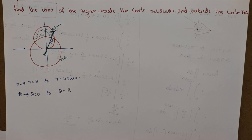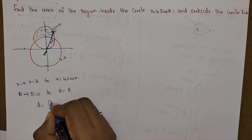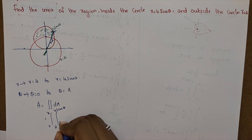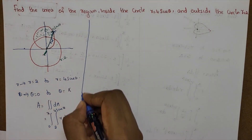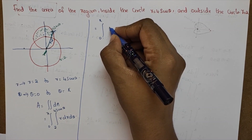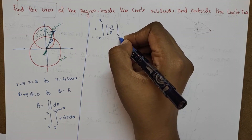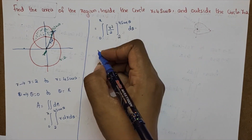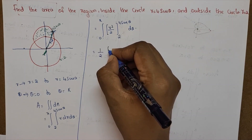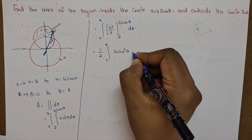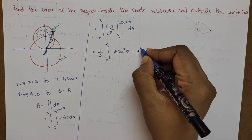That is the area and the question. Area is equal to double integral dA, which is equal to integral 0 to pi — that is the limit — 2 to 4 sin theta, r dr d theta. Integrating gives integral 0 to pi of r squared by 2, with limit from 2 to 4 sin theta, d theta. That is equal to one-half integral 0 to pi of 16 sin squared theta minus 4 d theta.